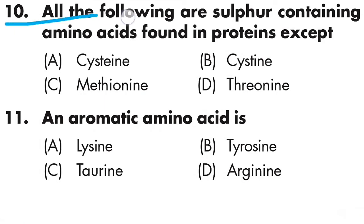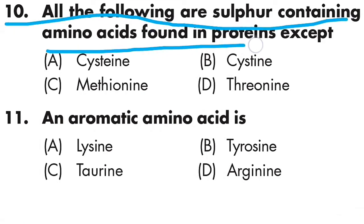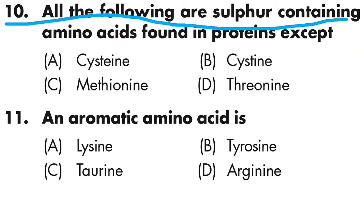Question number ten: all of the following are sulfur-containing amino acids found in proteins EXCEPT — Option A is cystathionine, Option B is cystathionine, Option C is methionine, Option D is threonine. Option D is correct — threonine is not a sulfur-containing amino acid.